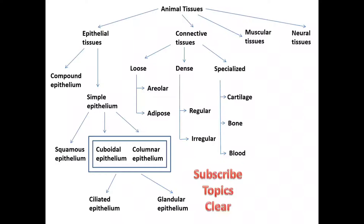Muscular tissues are further divided into three types. First type: Skeletal muscular tissues. Second: Smooth muscular tissues. Third: Cardiac muscular tissues. And the final type of tissues is Neural tissues.